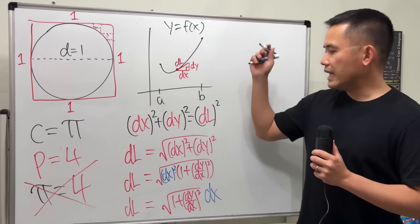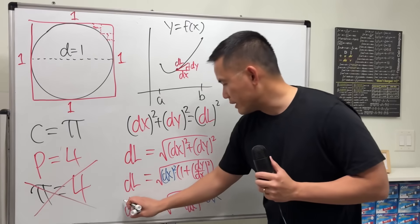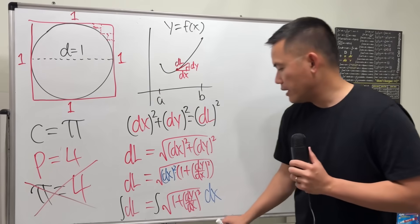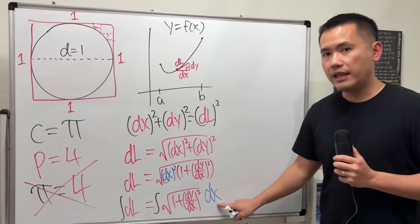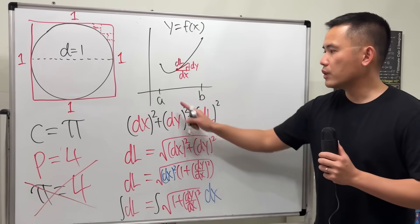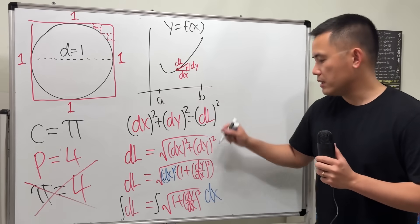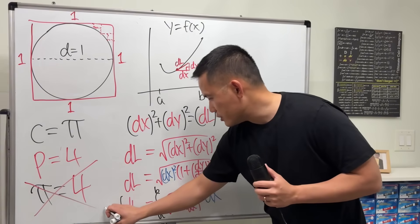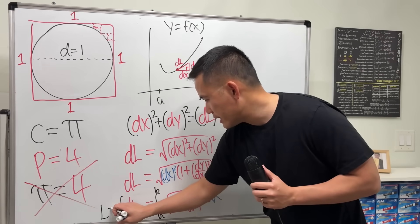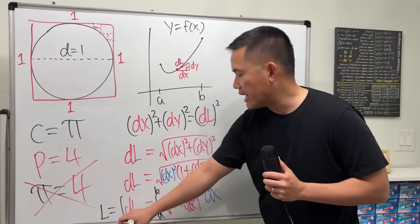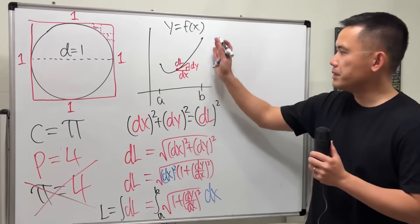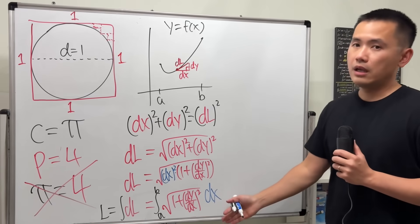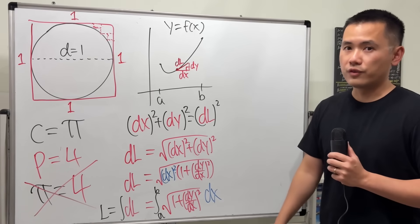To get the total length, we just have to integrate it. Because we're in the DX world, we integrate from A to B. And that's exactly the arc length formula for this piece of the curve.